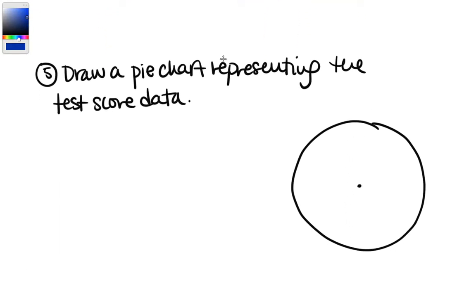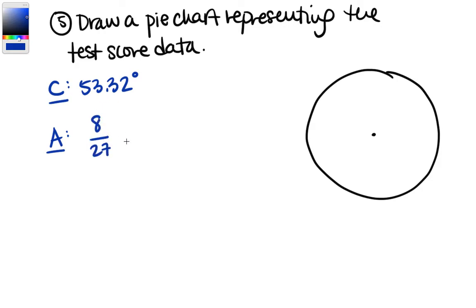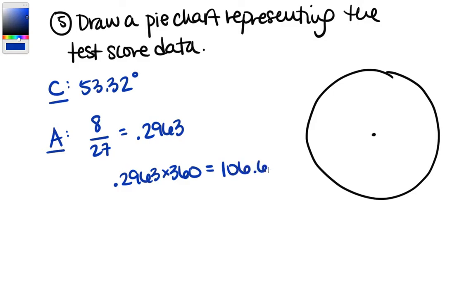Now we want to draw a pie chart representing the test score data for grades A, B, C, D, and F. For A, eight of the 27 students scored 90 or above. Eight divided by 27 is 0.2963, or 29.63%, and multiplied by 360 gives 106.67 degrees. We already have C at 53.32 degrees.